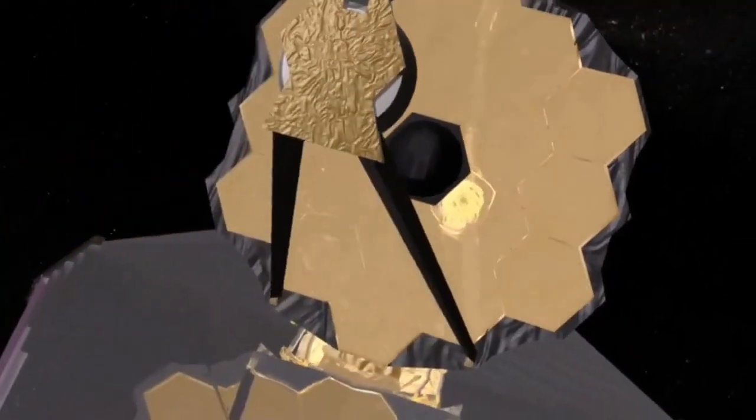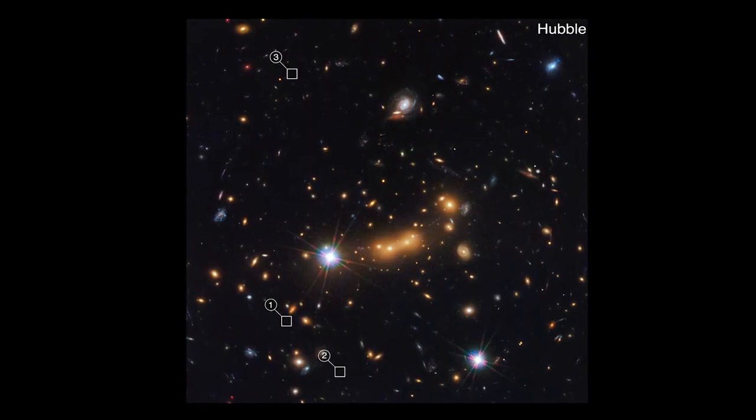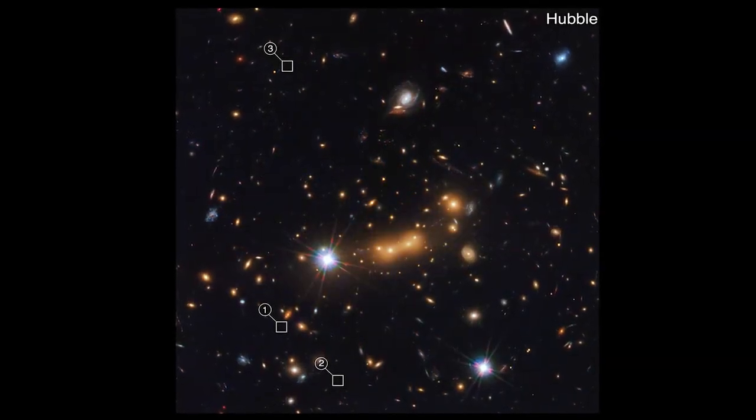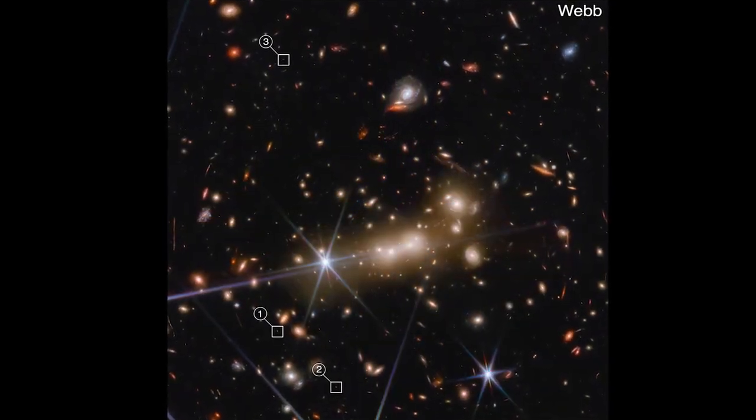Now, thanks to the James Webb Space Telescope, we look and were able to resolve two objects. Astronomers are currently arguing about whether there are two galaxies or two groupings of stars inside a galaxy. These are the questions that Webb is designed to help us answer.